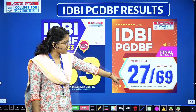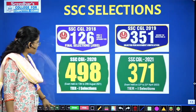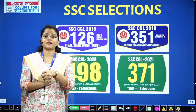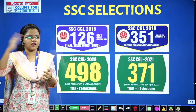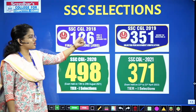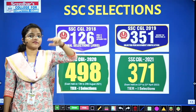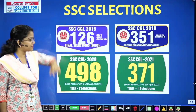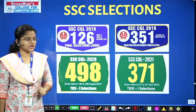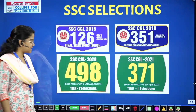In IDBI results, 27 in the merit list and 69 in the waiting list — that is for 2021 to 2022. In the SSC domain as well, Sri Chaitanya has shown strong results. In CGL 2018 final selections: 126. SSC CGL 2019 document verification selectees: 351. CGL 2020 Tier 1 to Tier 2 selectees: 498. CGL 2021 Tier 1 to Tier 2 selectees: 371.